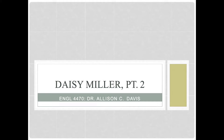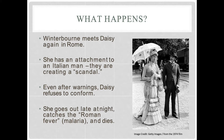As we begin, I want to clarify what happens in the second half of the novel. You'll remember that Winterbourne meets Daisy again in Rome and that she's developed an attachment to an Italian man, and they're basically creating what would be considered a social scandal. He and others in her circle start to try to warn her, but even after she's given these warnings, Daisy refuses to conform to society's expectations. She goes out with Mr. Giovanelli at different places and times of day when it wouldn't be considered appropriate for a single woman to be seen with a man, and at one of these times she goes out late at night and catches what's called the Roman fever — malaria — and then she eventually dies.